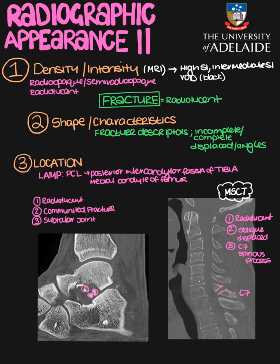I hope this clarifies how we interpret fractures as well as normal anatomy on both CT and MRI. It is very important to revise this convention and always remember that when you hear the term 'radiographic appearance,' you describe: firstly density or intensity, secondly shape, and thirdly location. Thank you very much for your attention.